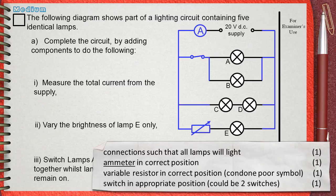The third mark is for variable resistor in correct position. Condone poor symbol means that if you draw a poor symbol but seems to be a variable resistor, this will be okay.